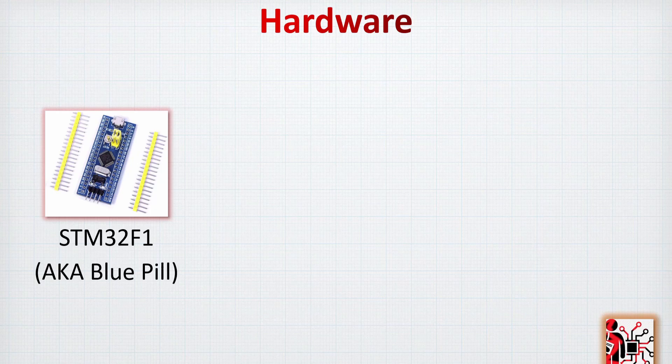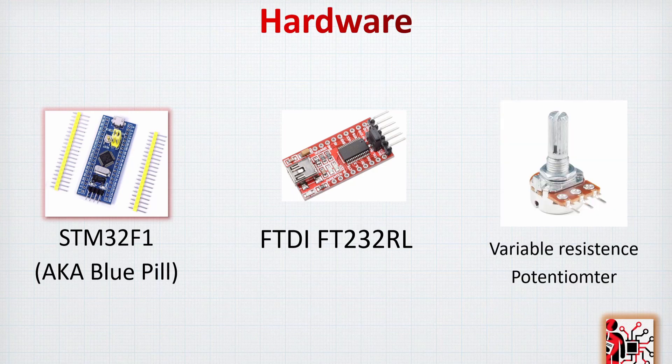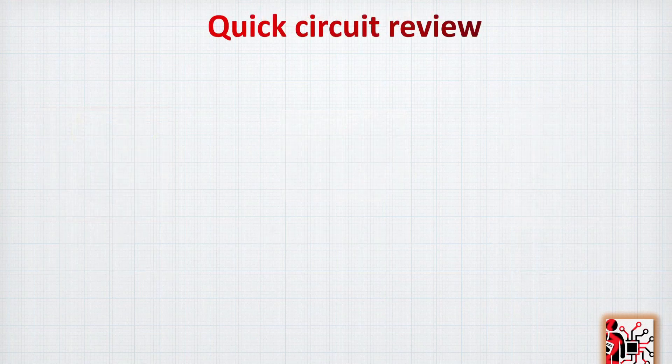The hardware we are going to use is the STM32F1-based microcontroller, also known as the blue pill board. We will also use the FTDI FT232 to allow UART serial communication between the STM32F1 and the computer, and finally a potentiometer to play with and see how our ADC responds to changes.